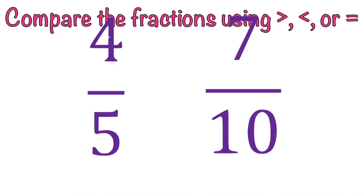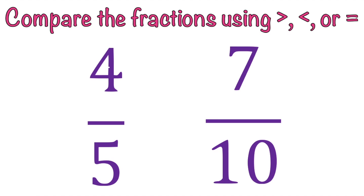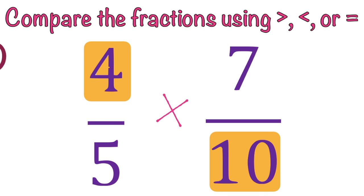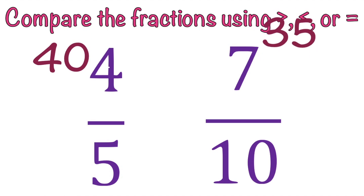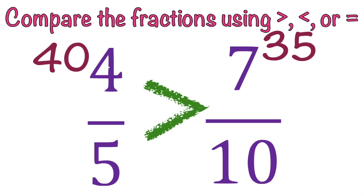How about this one? 4 fifths and 7 tenths. Write your answer on your drill board. Let's answer it together. 10 times 4 equals 40, while 5 times 7 equals 35. The answer is greater than because 40 is bigger than 35. So, we have 4 fifths greater than 7 tenths.